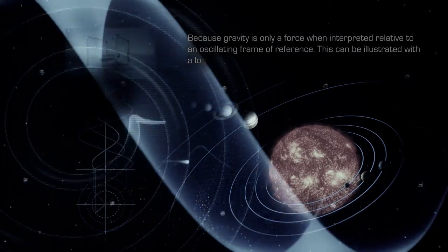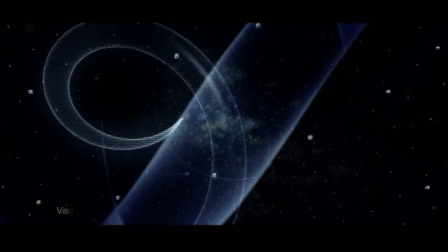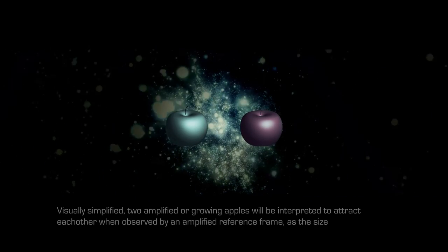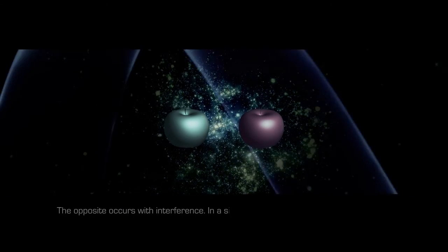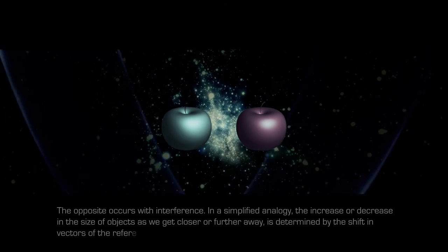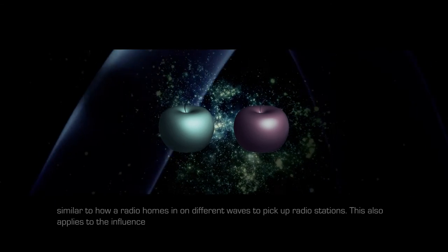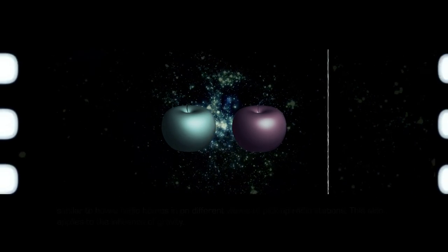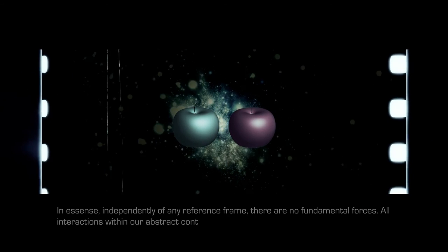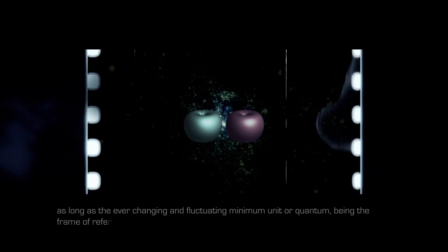This can be illustrated with a logarithmic spiral curve being reduced to a helix curve by the reference frame, making objects spin and move in orbits. Visually simplified, two amplified or growing apples will be interpreted to attract each other when observed by an amplified reference frame, as the size seems unaffected. The opposite occurs with interference. In a simplified analogy, the increase or decrease in the size of objects as we get closer or further away is determined by the shift in vectors of the reference frame, similar to how a radio homes in on different waves to pick up radio stations. This also applies to the influence of gravity. In essence, independently of any reference frame, there are no fundamental forces. All interactions within our abstract continuity can be mathematically derived through interference and resonance as long as the ever-changing and fluctuating minimum unit or quantum, being the frame of reference, is taken into account. In this case, we can see the force-effects, but not the actual force carriers.